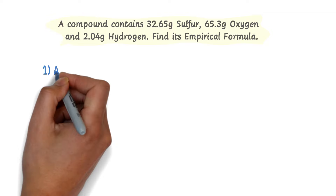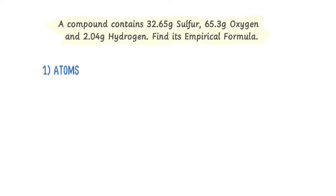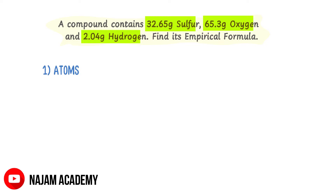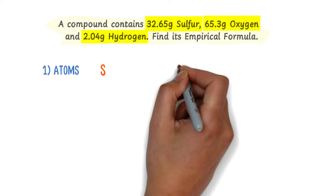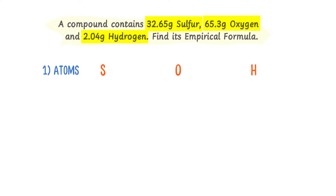Firstly, I will highlight the atoms. There are three atoms given in the question: sulfur, oxygen, and hydrogen. We know that the relative atomic mass of sulfur is 32 grams, the relative atomic mass of oxygen is 16 grams, and the relative atomic mass of hydrogen is 1 gram.